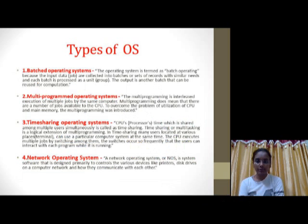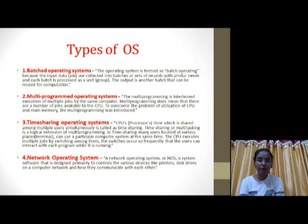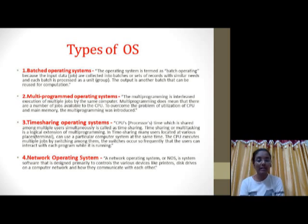Now we shall see the types of OS. The first type is the Batch Operating System. In a Batch Operating System, every process is performed in batches. Input data is taken in the form of batches, and the output will also be given as a batch. This makes working easier for the computer system to perform tasks in a simpler manner.